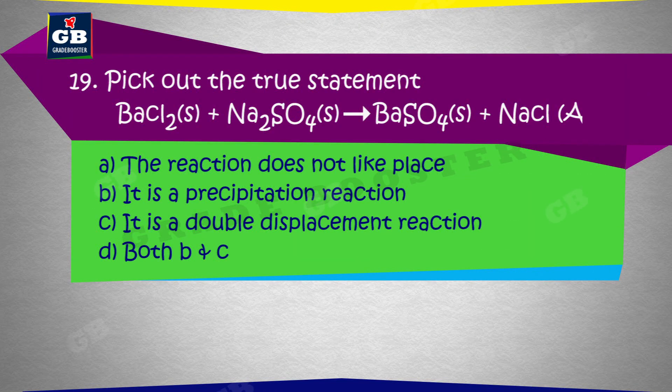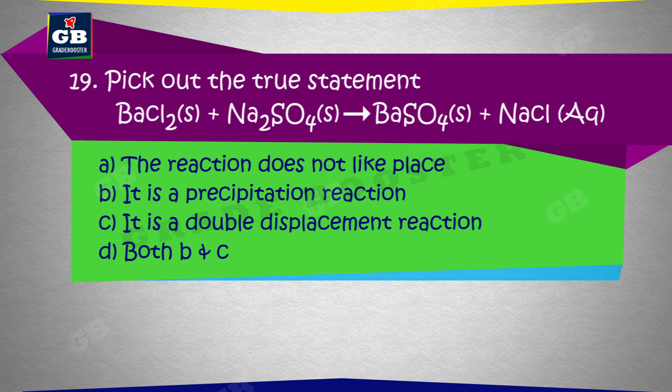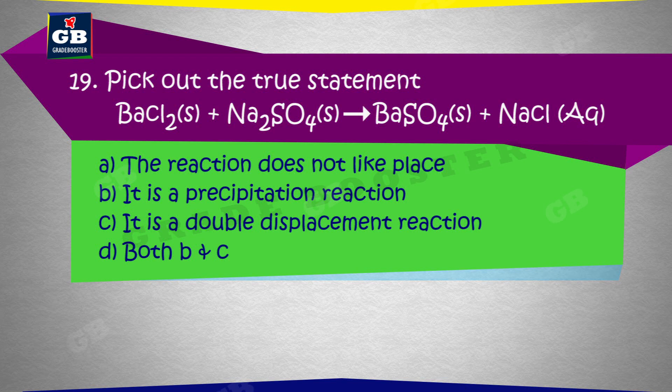Pick out the true statement. BaCl2(s) plus Na2SO4(s) gives rise to BaSO4(s) plus NaCl(aq): A. The reaction does not take place, B. It is a precipitation reaction, C. It is a double displacement reaction, D. Both B and C.